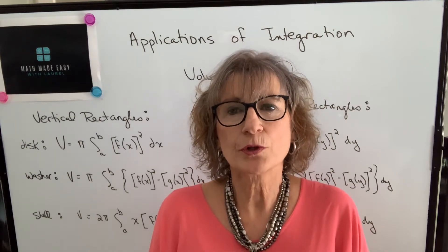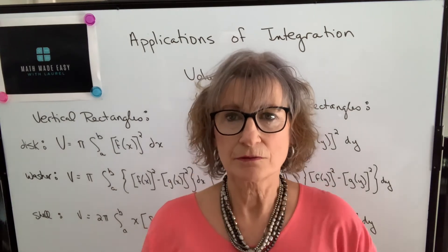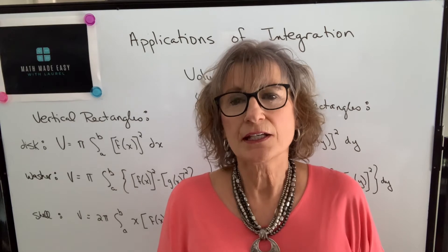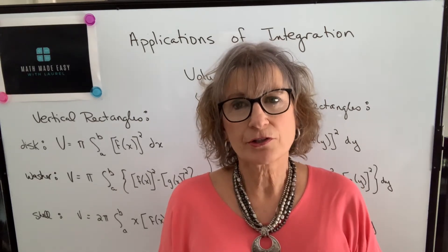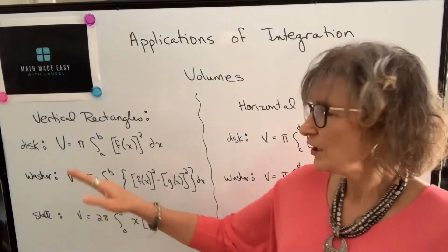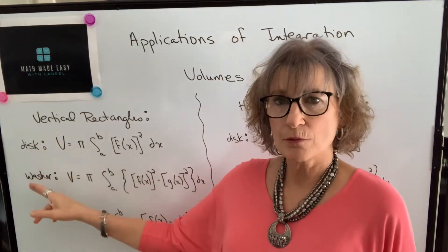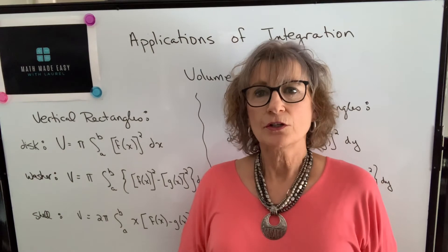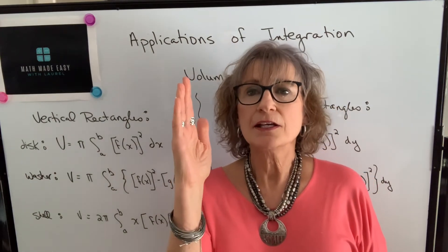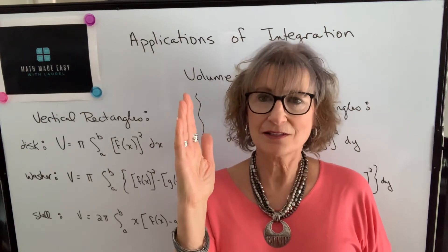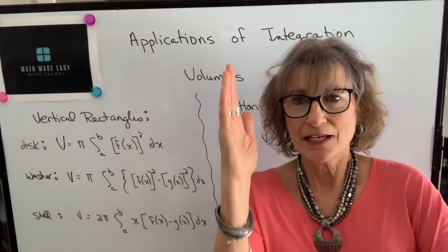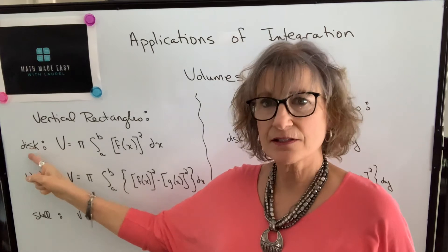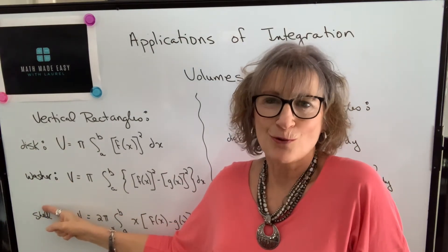First of all, determine whether you're going to be working with vertical or horizontal rectangles. If you choose vertical rectangles, it means everything will be in terms of x — your functions will be in terms of x and your limits on your integral will be the x values. If you're using vertical rectangles you're going to have three options as to what method or formula to use. To know which method, determine whether your vertical rectangle is perpendicular or parallel to the axis of revolution. If it is perpendicular — in other words it's rotating around the x-axis — then your two options are disc or washer depending on whether there's a hole in the middle or not.